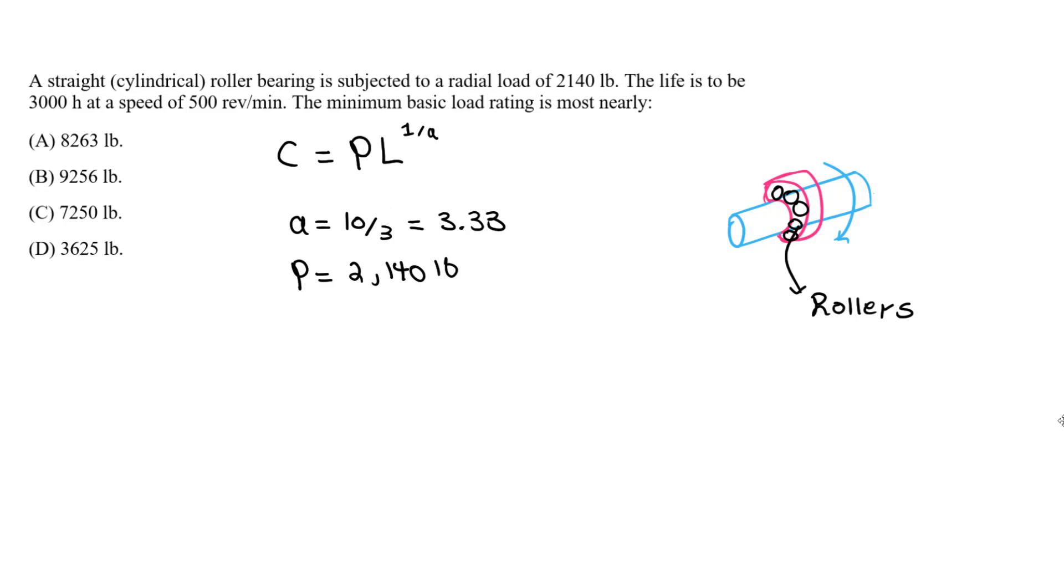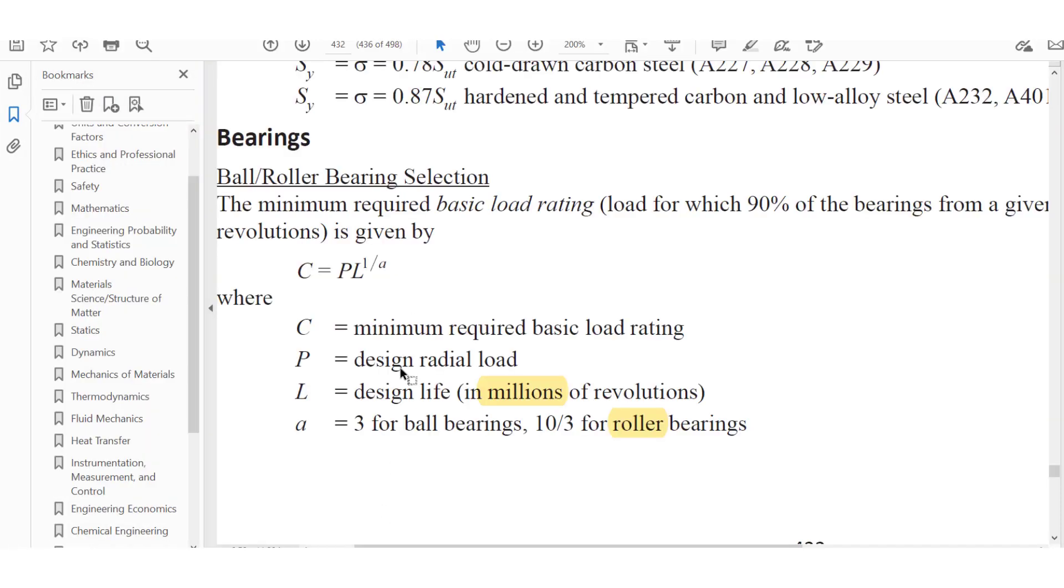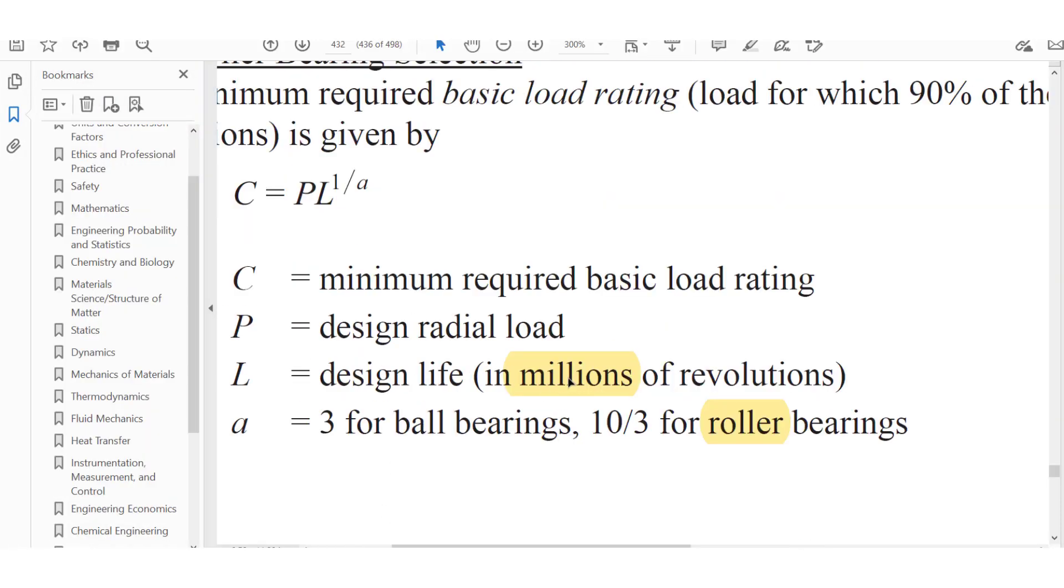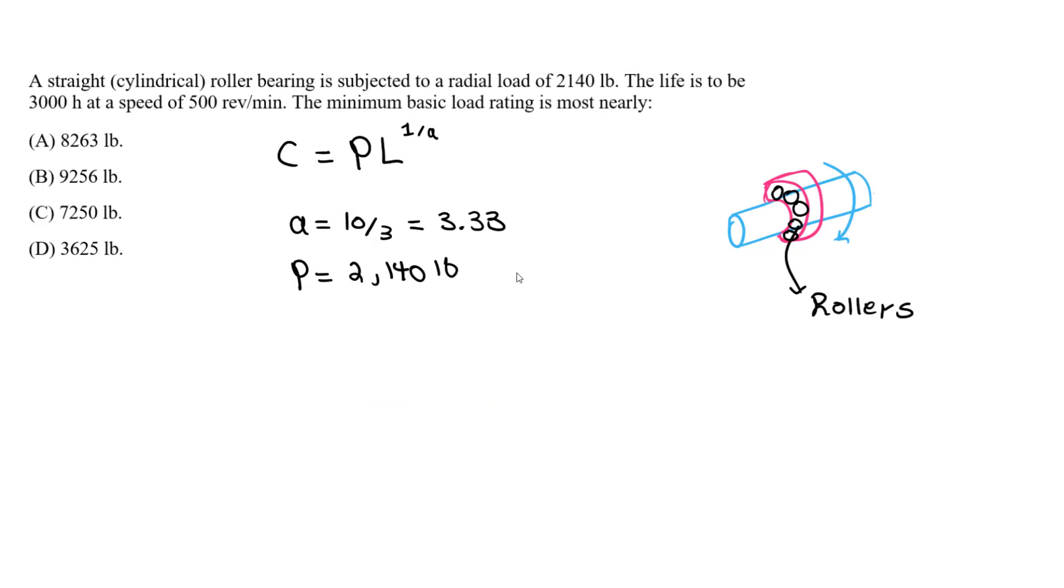And the tricky thing is the L value now, and this is important. It has to be—if you look in the handbook—the design life in millions of revolutions. So we have to convert that to revolutions. What we do is we're given that we have 3000 hours and 500 revolutions per minute. So for the L value, we start with the time here, the total time, which is 3000 hours.